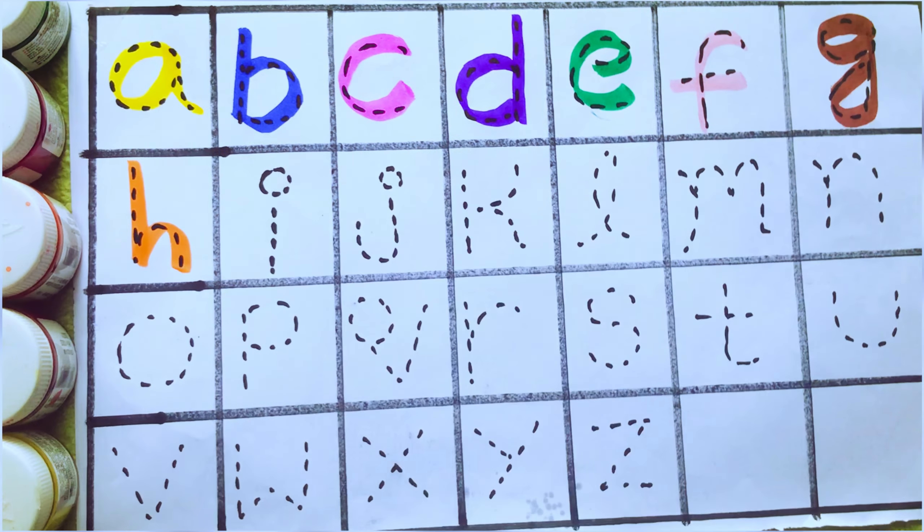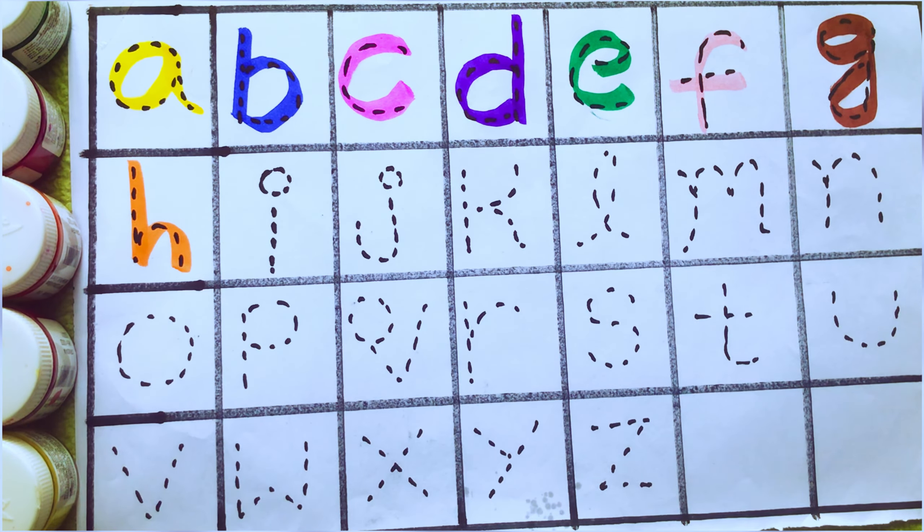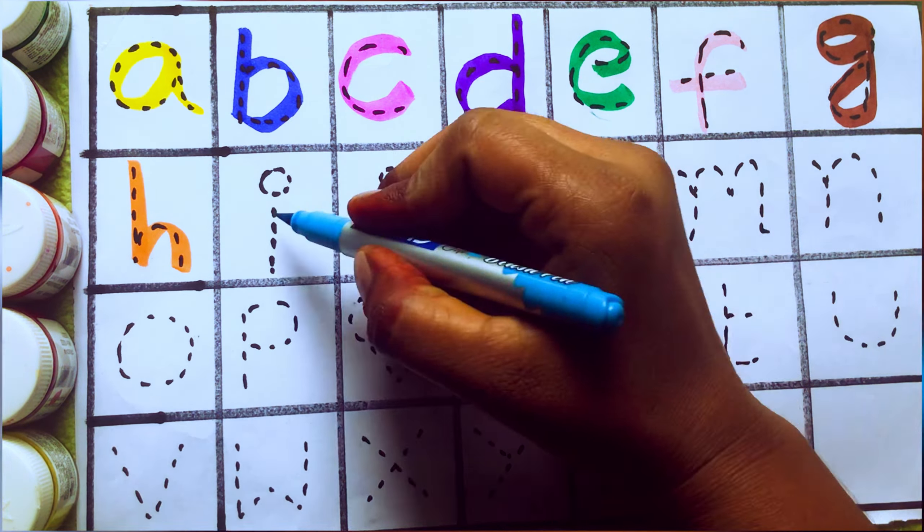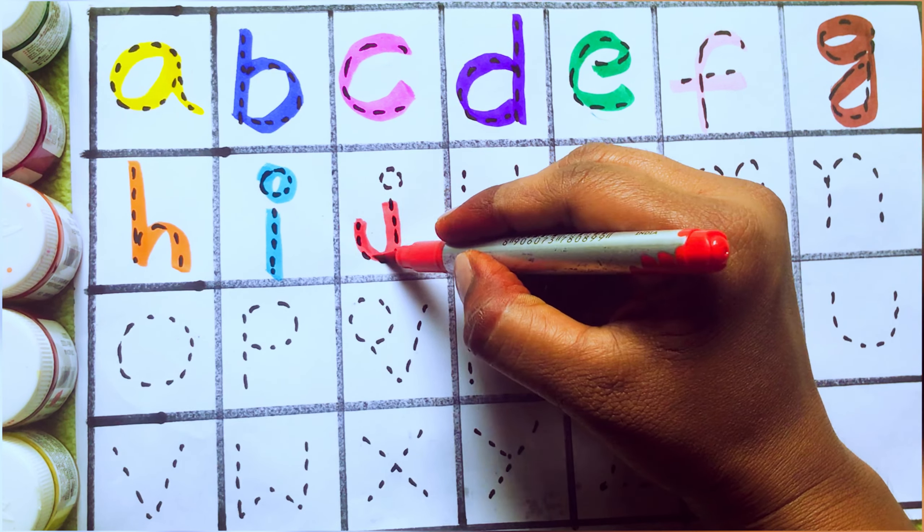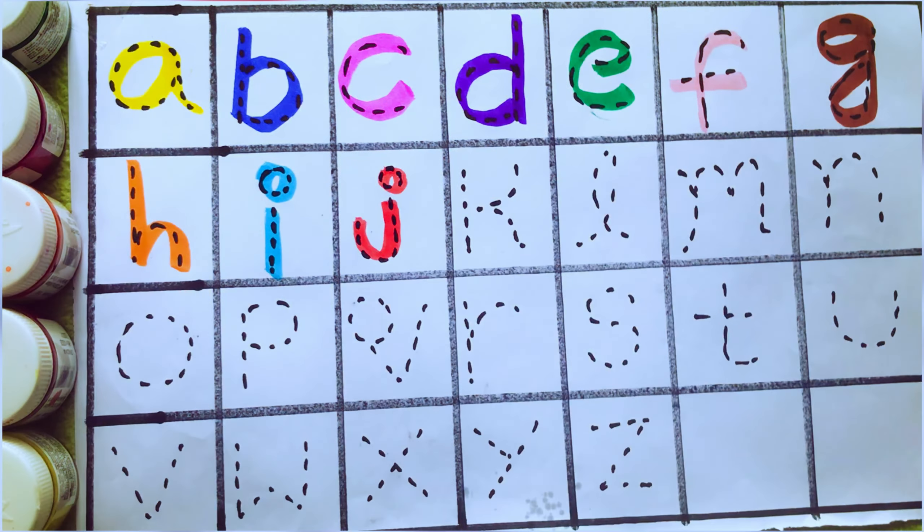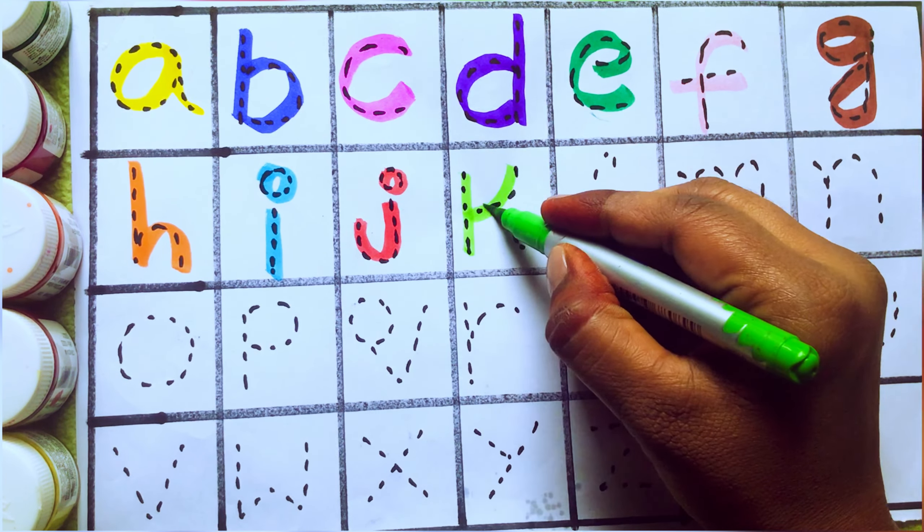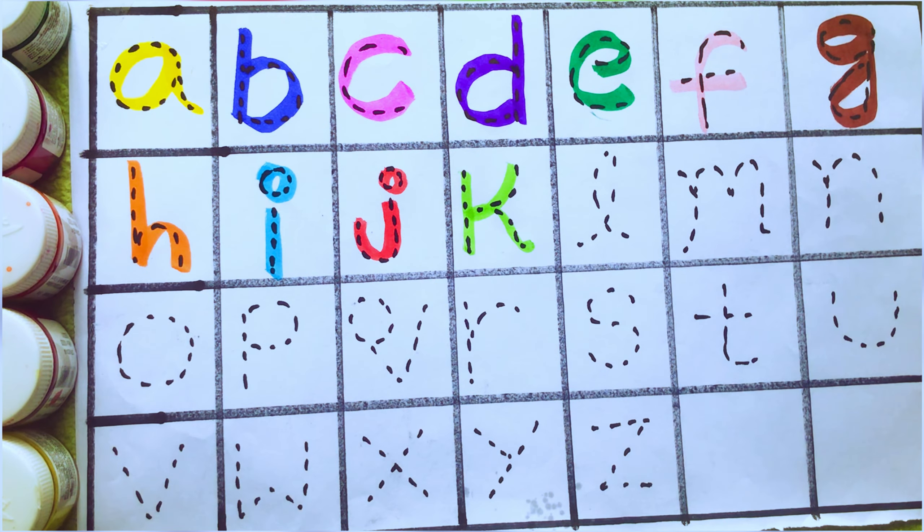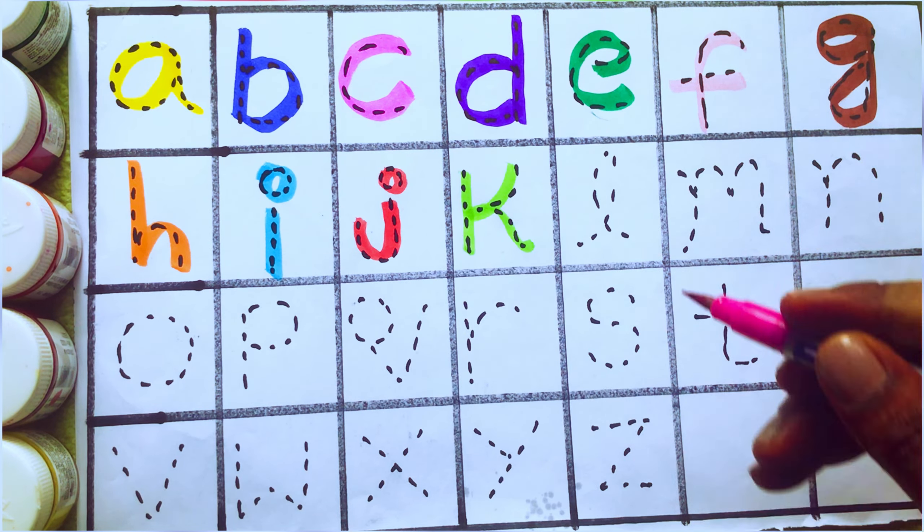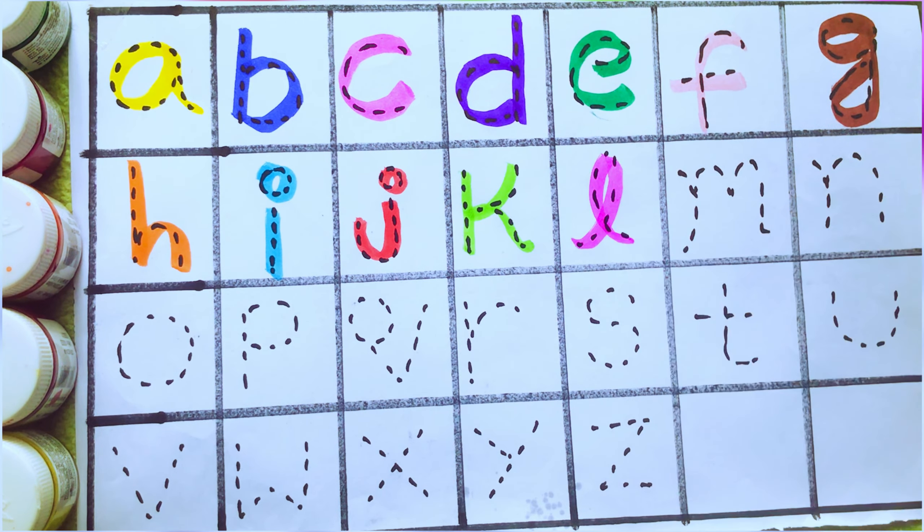G for goat, H for head, I for ink, J for jar, K for kite, L for lion.